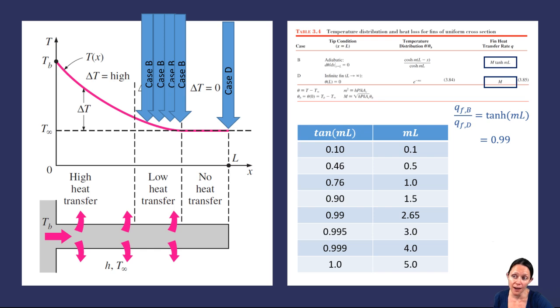We could keep on increasing the length, but you can see there's definitely a point of diminishing returns. A higher ML corresponds to more material, more weight, bigger size, higher cost. You may figure that getting 76% of the heat transfer rate of an infinitely long fin is acceptable, especially considering that getting 99% would mean that your value of ML would have to be 2.65 times higher. It'll really be a design choice that you as an engineer will have to make when you do your cost benefit analysis.